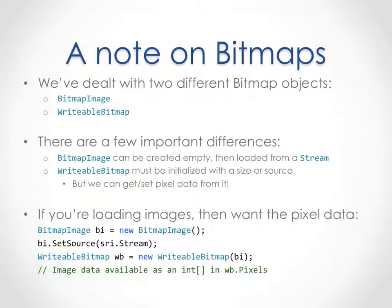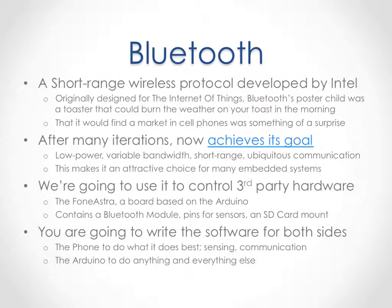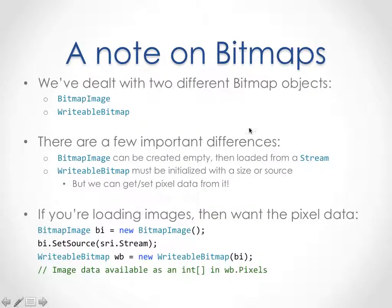With a writable bitmap, you can generate image data, then load it into the bitmap and display it. You can load it from a bitmap, and if you load the bitmap image from a stream, you can then put it into a writable bitmap and get an int array.